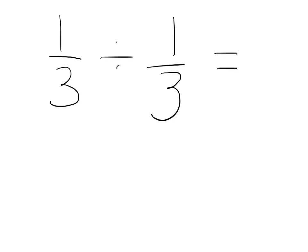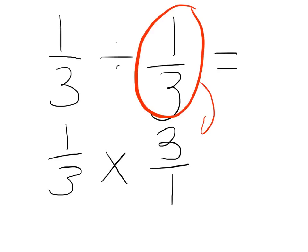So for example, if I take 1 over 3 divided by 1 over 3, this is actually the same thing as 1 over 3 multiplied by 3 over 1. So 3 over 1 comes from the fact that that is what happens when you flip 1 over 3.